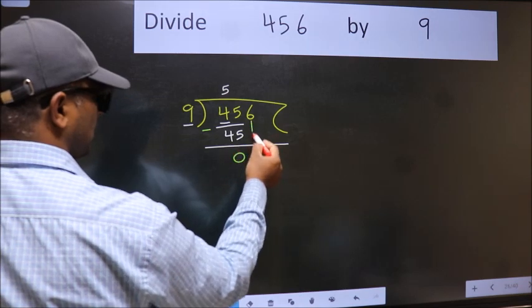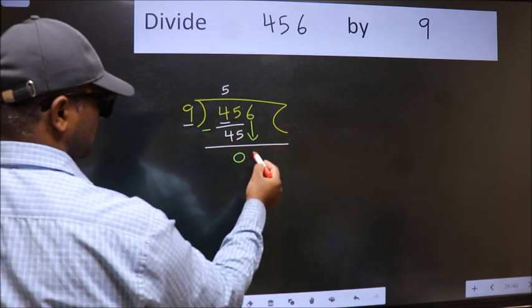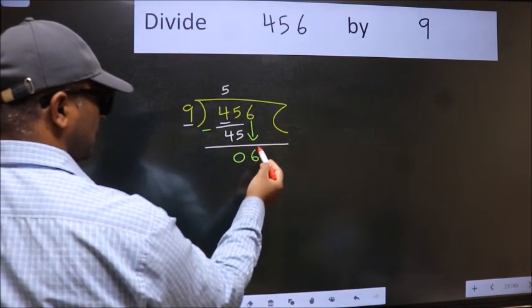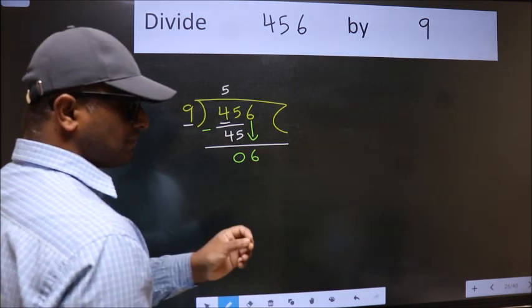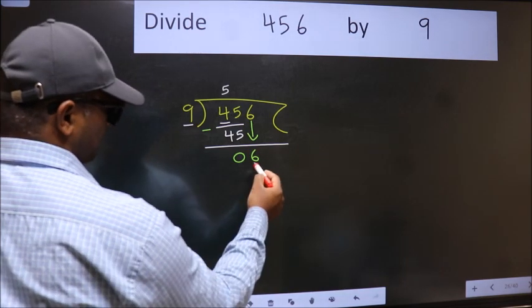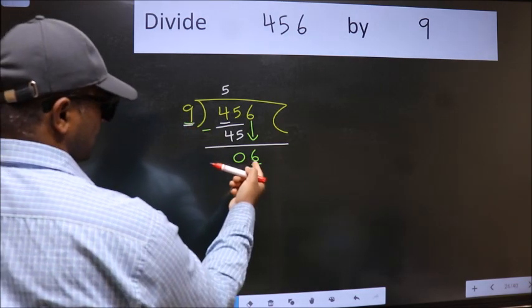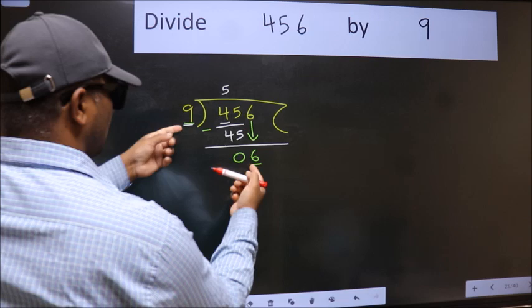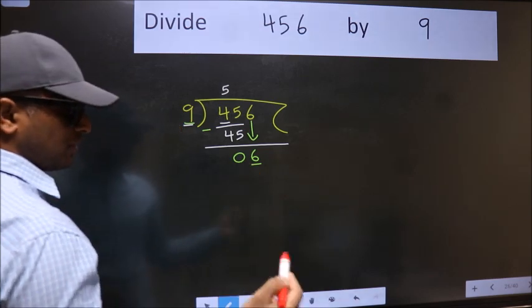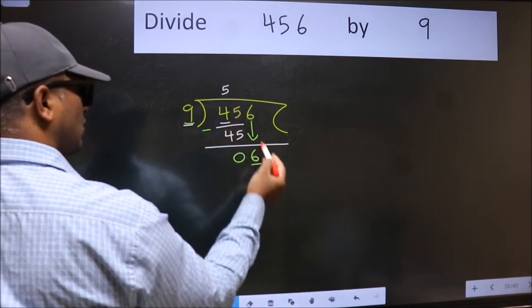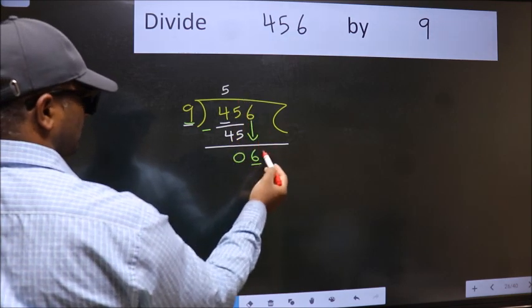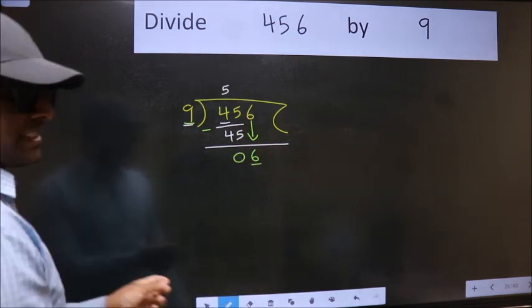After this, bring down the beside number. So, 6 down. After this step, the mistake happens. And the mistake is this: Here we have 6 and here 9. 6 is smaller than 9. So what many do is they directly put dot, take 0, which is wrong.